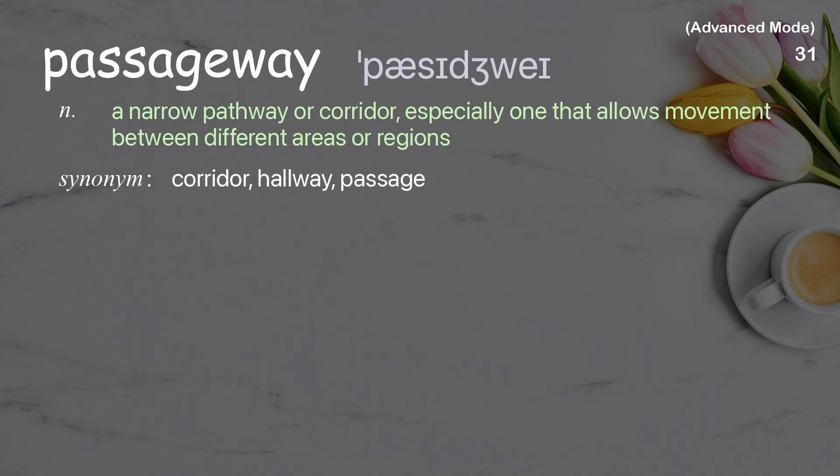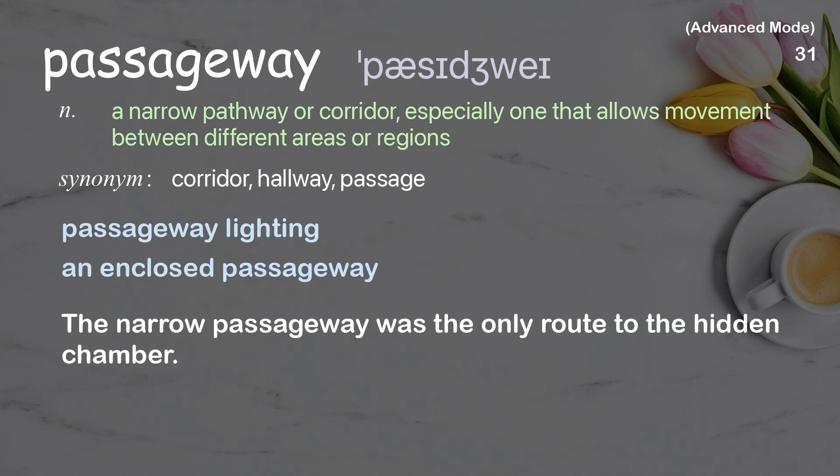Passageway: a narrow pathway or corridor, especially one that allows movement between different areas or regions. Examples: passageway lighting, an enclosed passageway. The narrow passageway was the only route to the hidden chamber.